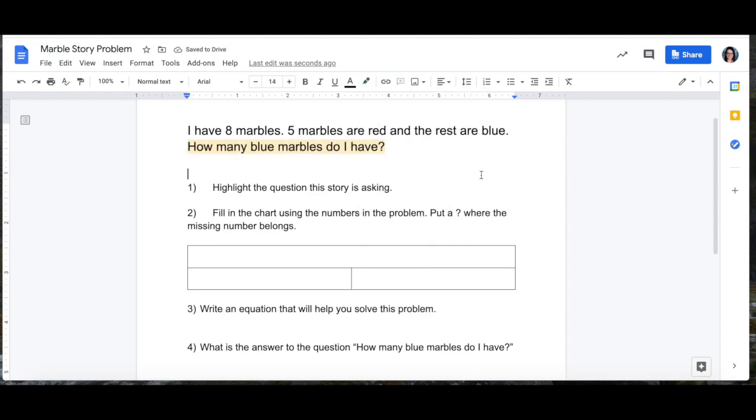After you've highlighted the question the story is asking, you're going to come down to one of those charts. You're going to fill in this chart using the numbers from the problem. Put a question mark where the missing number belongs. I'll read the story one more time to help you. I have eight marbles. Five marbles are red and the rest are blue. How many blue marbles do I have? You'll fill in the chart to show what's happening in this problem.